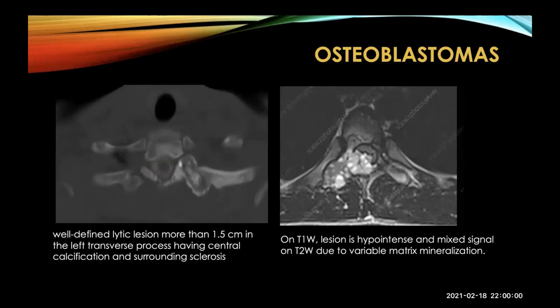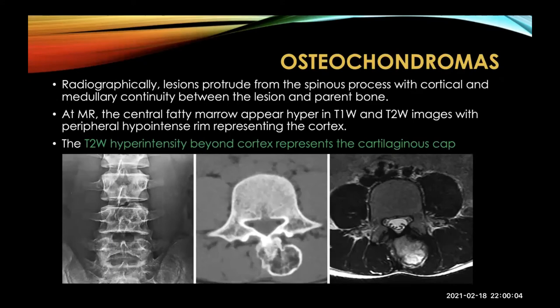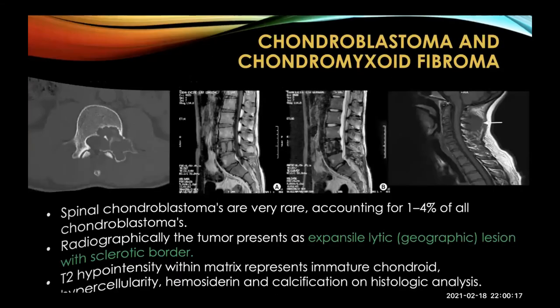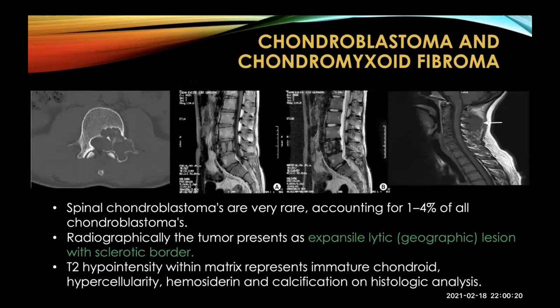Osteochondroma is mostly seen in the spinous process. On MRI, the T2 hyperintensity beyond the cortex represents the cartilaginous cap. Chondroblastoma and chondromyxoid fibroma are very rare but can be seen. On CT, these appear as aggressive, expansile lesions with a sclerotic border. On MRI, there is hyperdensity within the matrix representing immature chondroid tissue, with hypointense areas and calcification on histological analysis. These can involve the lumbar or cervical spine.